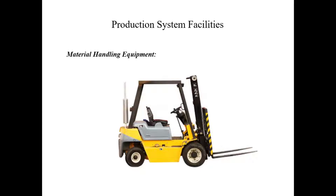In the production system facilities, we also have the material handling equipment. These are used to transport material, parts, and products from one location to another. They are also involved in the loading, positioning, and unloading of work parts into and from the machines. In systems with multiple workstations, the transportation of work units from one machine to another is also accomplished with the help of material handling equipment.